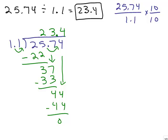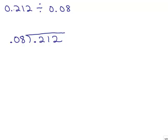Let's apply the shortcut to the second problem: 0.212 divided by 0.08. If it's given to you already in division format — like in a math book — you can use the shortcut. You want a whole number divisor, so you have to move the decimal 2 spaces to the right, which means multiplying by 100. You do the same thing to the number inside: move it 2 spaces to the right, and that's where the new decimal point goes. Then divide and check just like in the previous problem.